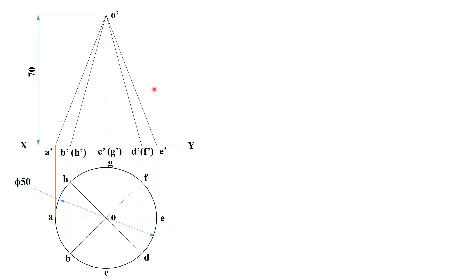Now perform sectioning. The section plane passes through a point 20 mm from the apex, and it is a horizontal section plane, meaning it is parallel to HP. This will be your section plane.